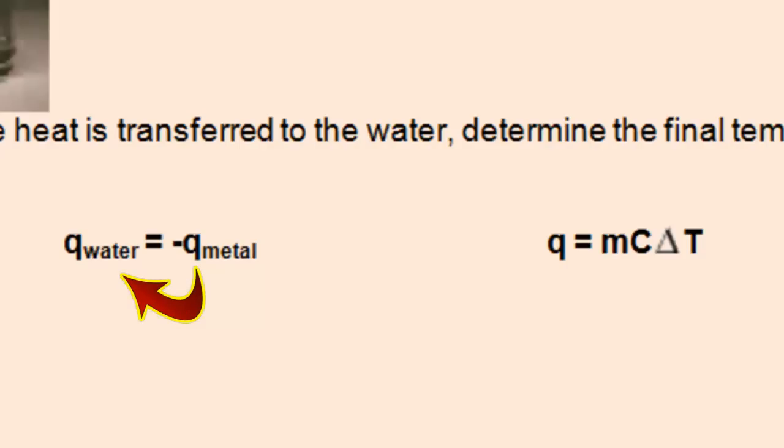and this equation simply shows the transfer of heat from the metal to the water, the metal losing the heat, therefore the negative sign in front of its Q, and the water gaining the heat.